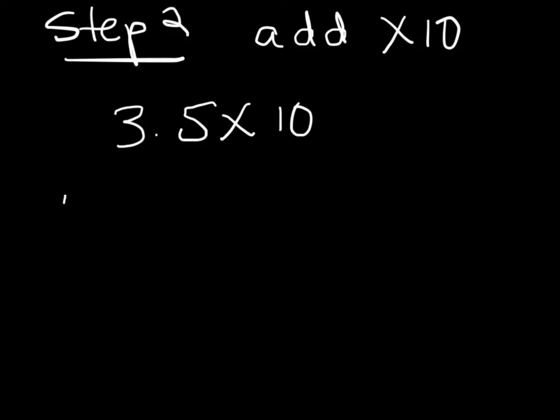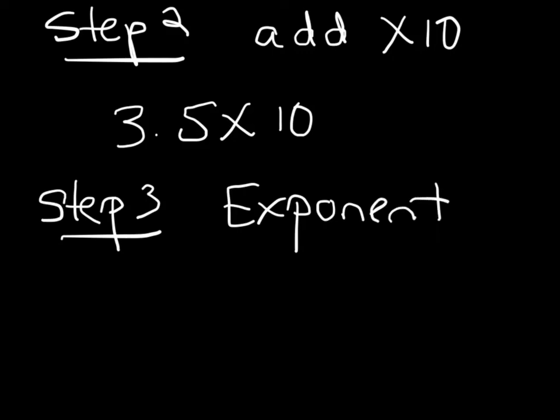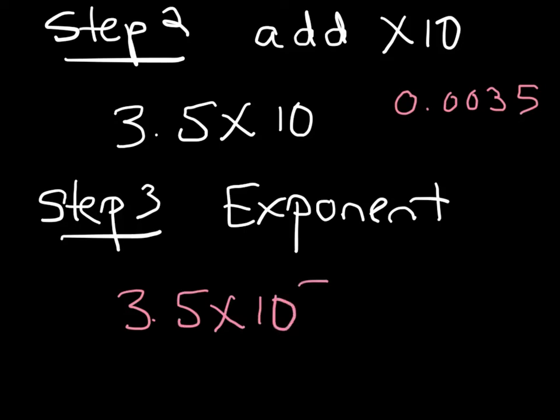So that means that we've got 3.5 times 10. Now step 3, the exponent, so the number is 0.0035. So for the exponent it's going to be negative, so it's going to be 3.5 times 10 make it negative, it's a small number and again the negative number means dividing. And this time the exponent is basically the total number of zeros 1, 2, 3 to the negative 3.